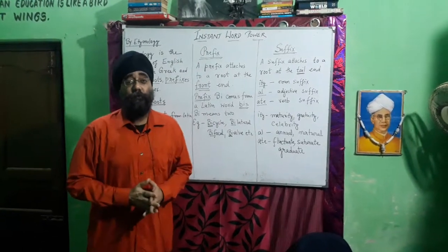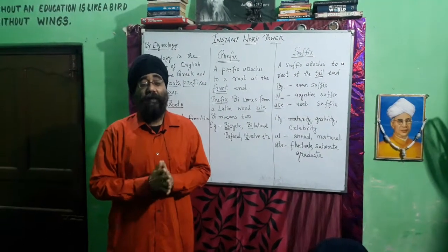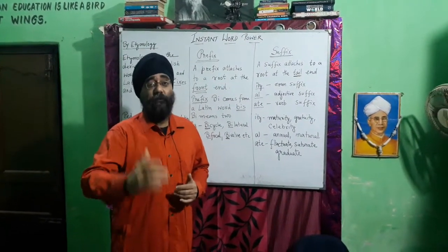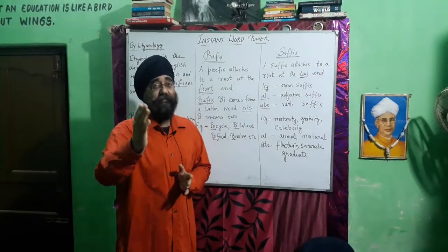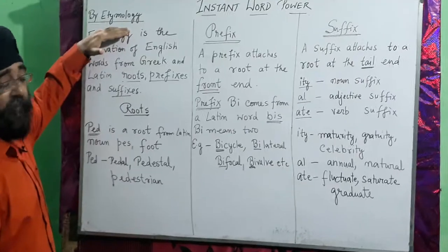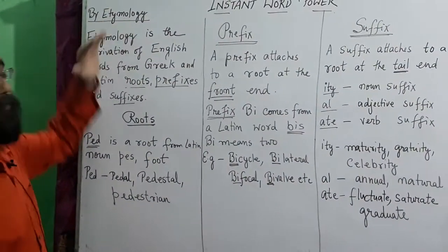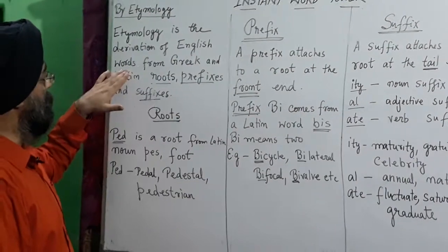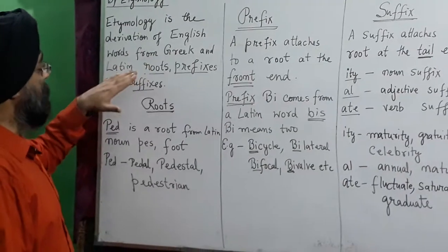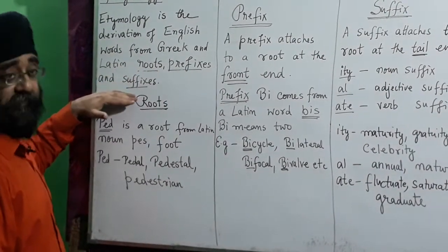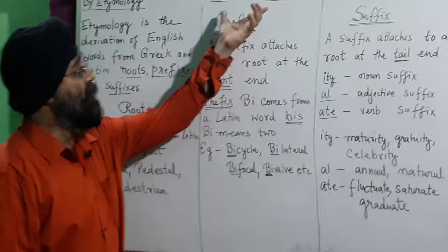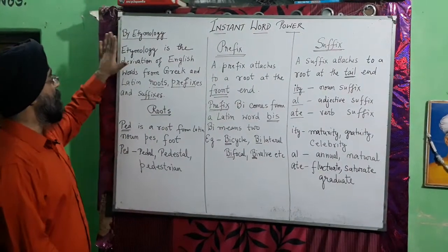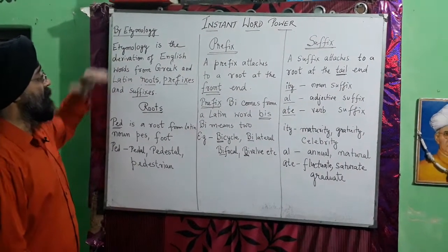I am here to show you the way we will pick up instant word power, which will help you in a very easy manner to pick up words regularly. In front of you is the topic: etymology. Etymology is the derivation of English words from Greek and Latin roots, prefixes, and suffixes. We are here to teach you instant word power, and this is the first step — by etymology.